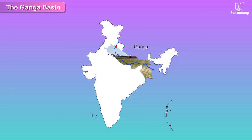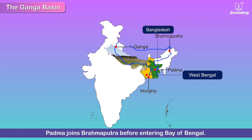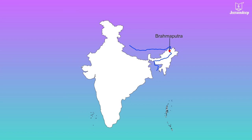The Ganga flows down through the northern plains, finally entering West Bengal. Here, it breaks up into two branches: Hooghly, which passes through West Bengal, and the other part called Padma, which flows into Bangladesh. The Padma then joins the Brahmaputra before entering the Bay of Bengal.